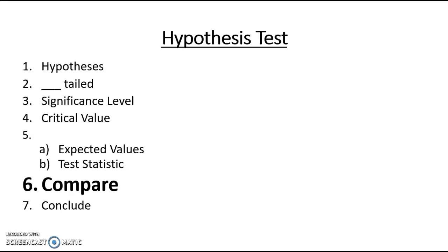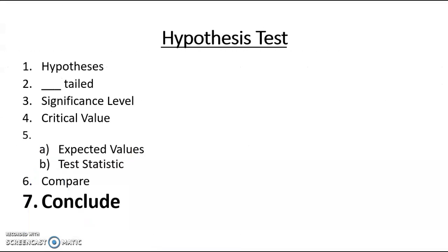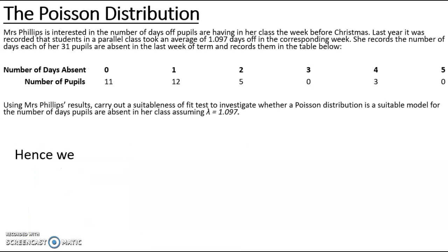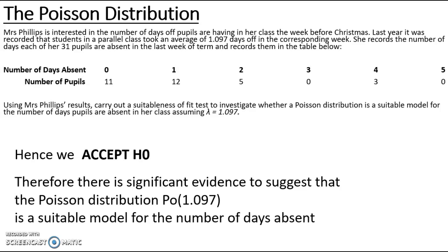Step six is to compare the test statistic with the critical value. On the chi-squared distribution, the critical value is 5.991, with values to the left accepting H0 and values to the right rejecting it. Since 0.2585 falls clearly in the belly of the graph, we accept H0. The conclusion is that there is significant evidence to suggest that Poisson(1.097) is a suitable model for the number of days absent.